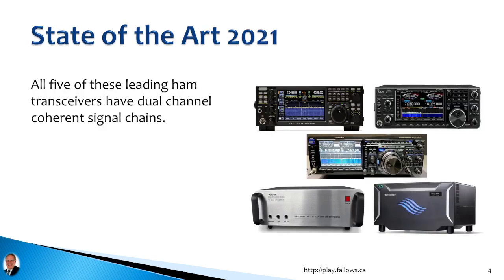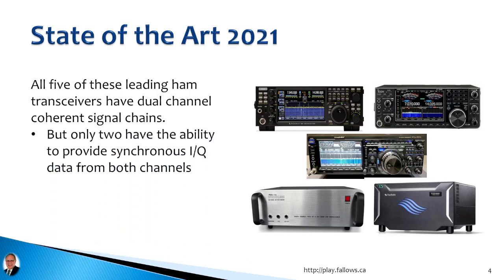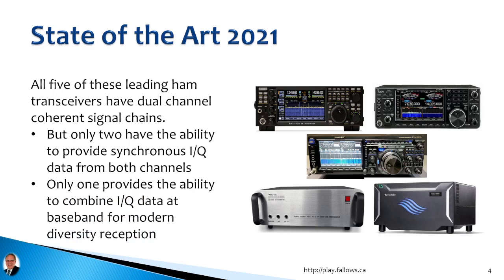As of last year, all five of these leading ham transceivers actually have dual channel coherent signal chains. So the hardware for doing diversity reception with the most modern ham radio transceivers is already there. But only two of these have the ability to provide synchronous IQ data from both channels — that's the Flex and the ANAN. And only one of these, the ANAN, provides the ability to combine IQ data at baseband for modern diversity reception. So we are really close right now — manufacturers need to take the next steps so we can all enjoy these features.